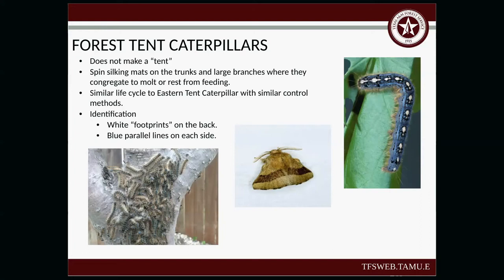The forest tent caterpillar does not make a tent. It spins silky mats on the trunk and large branches where they congregate and rest from feeding. They have a similar life cycle to the eastern tent caterpillar with some similar control methods. For identification, if you look on the back of the adult, you see white markings that kind of look like footprints going all the way down the back, and they also have blue parallel lines on each side.